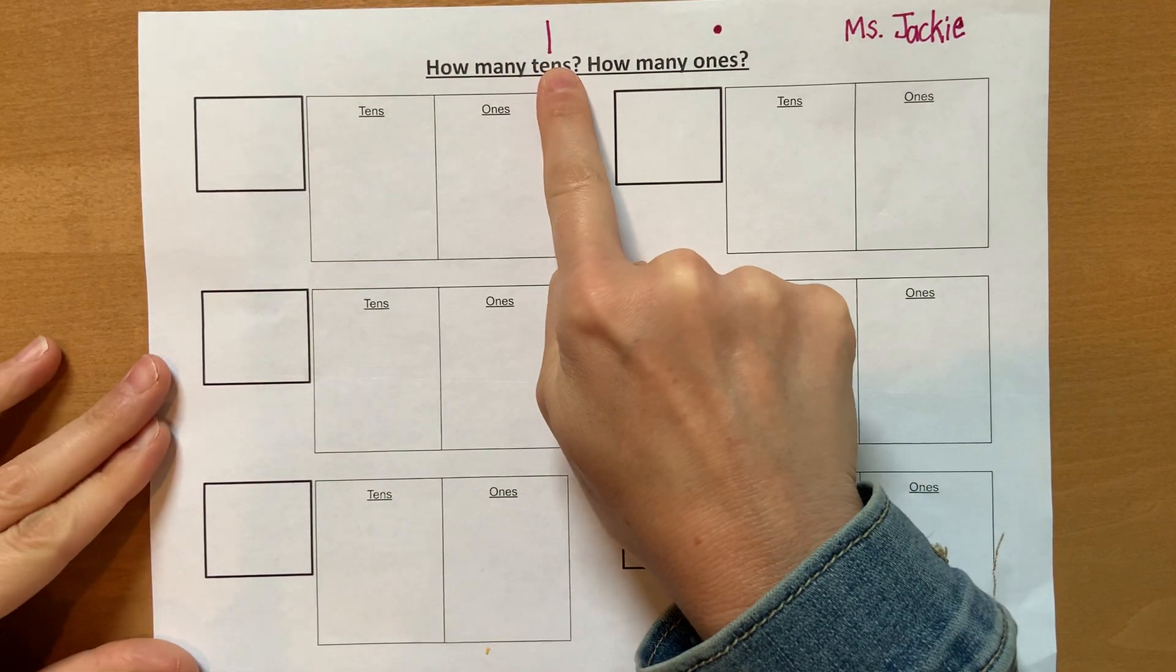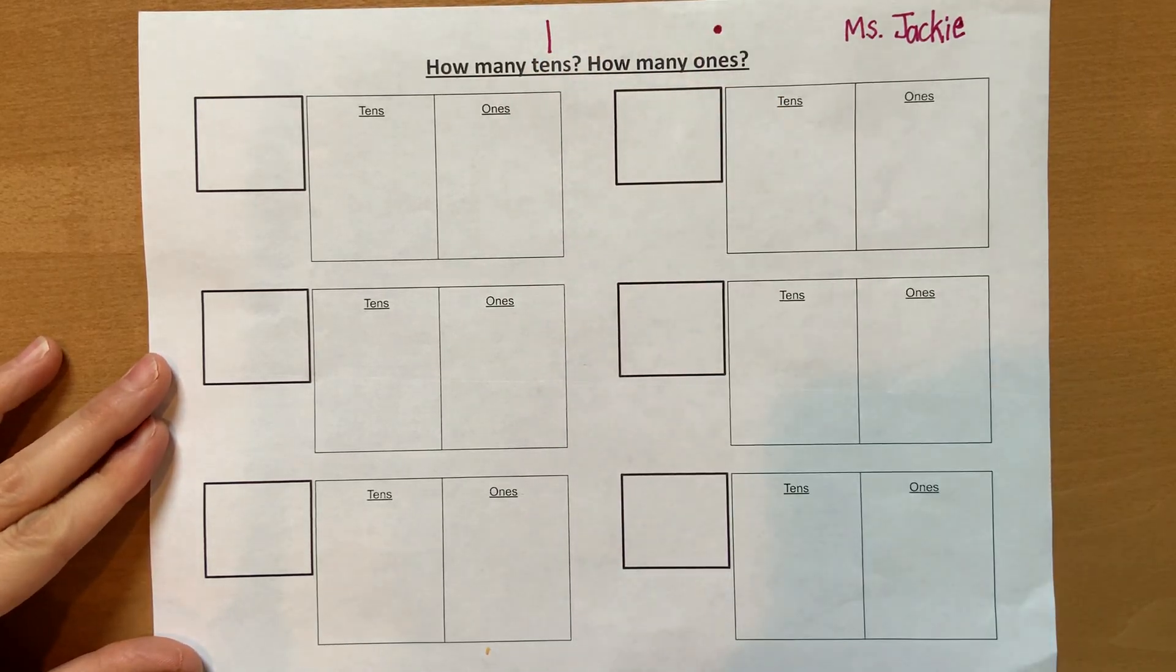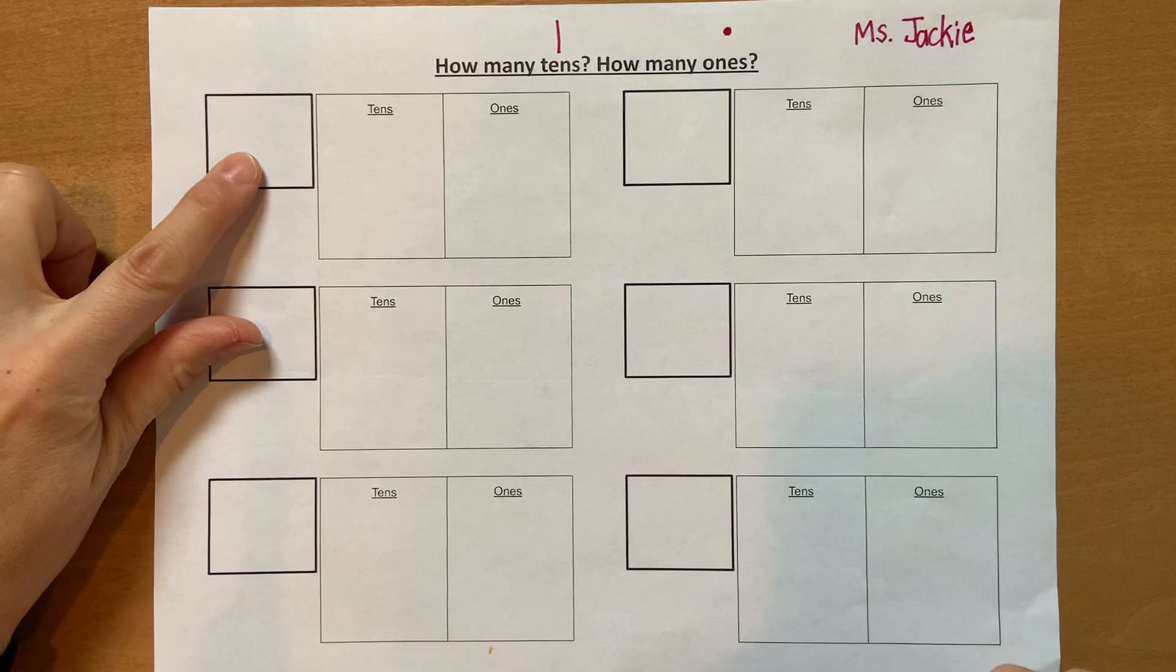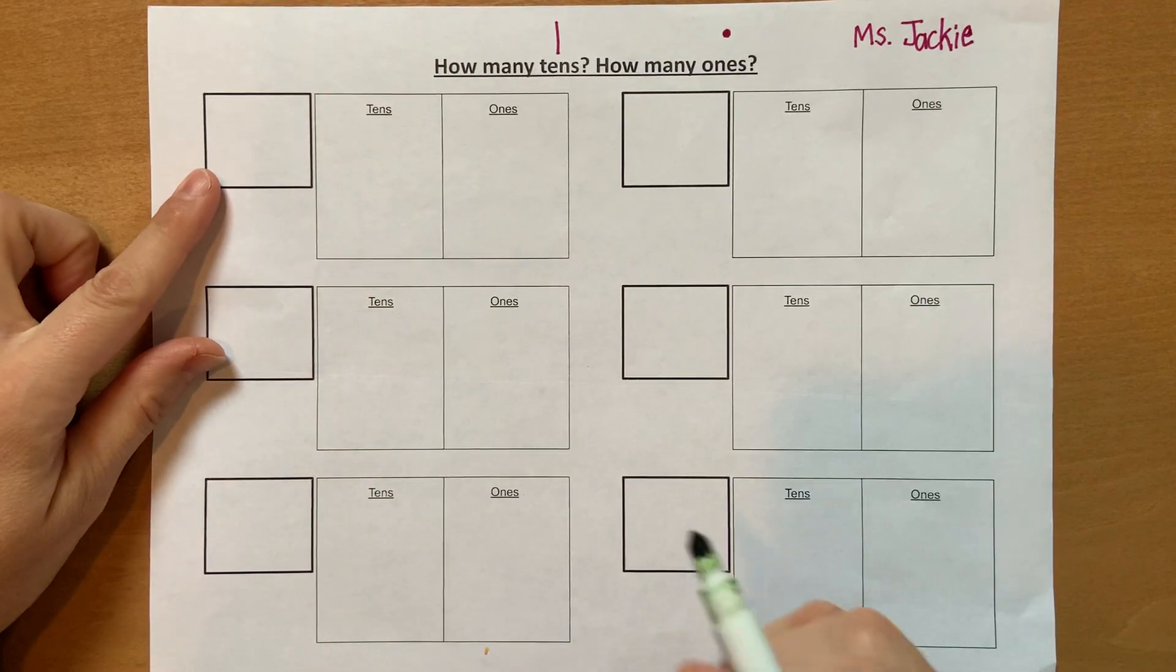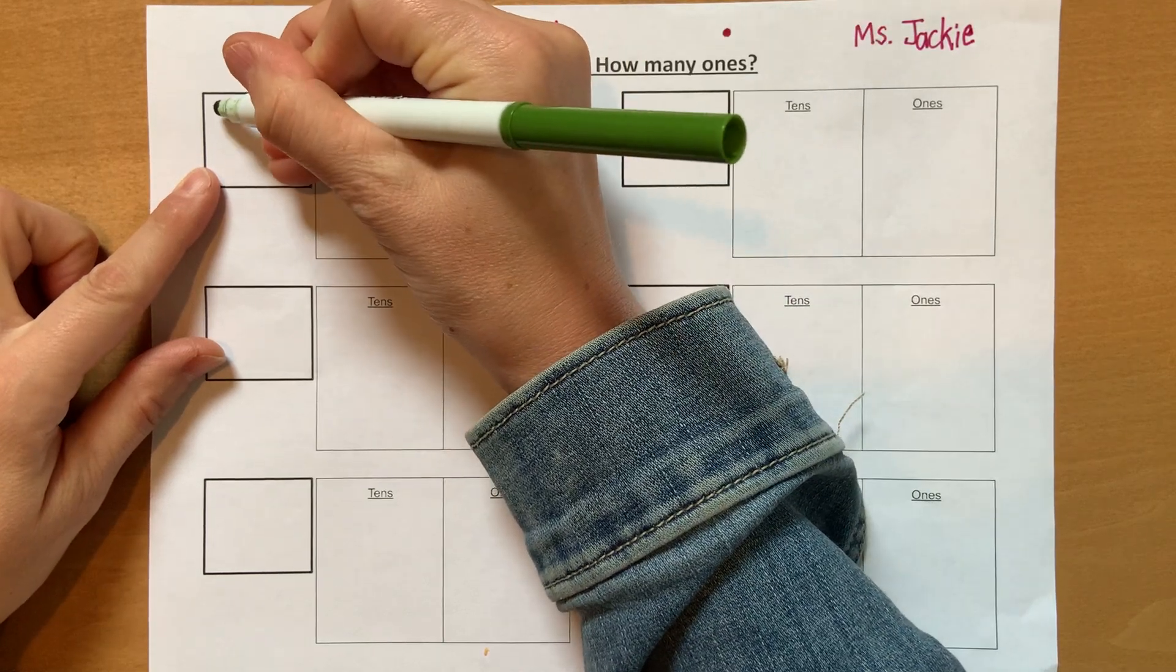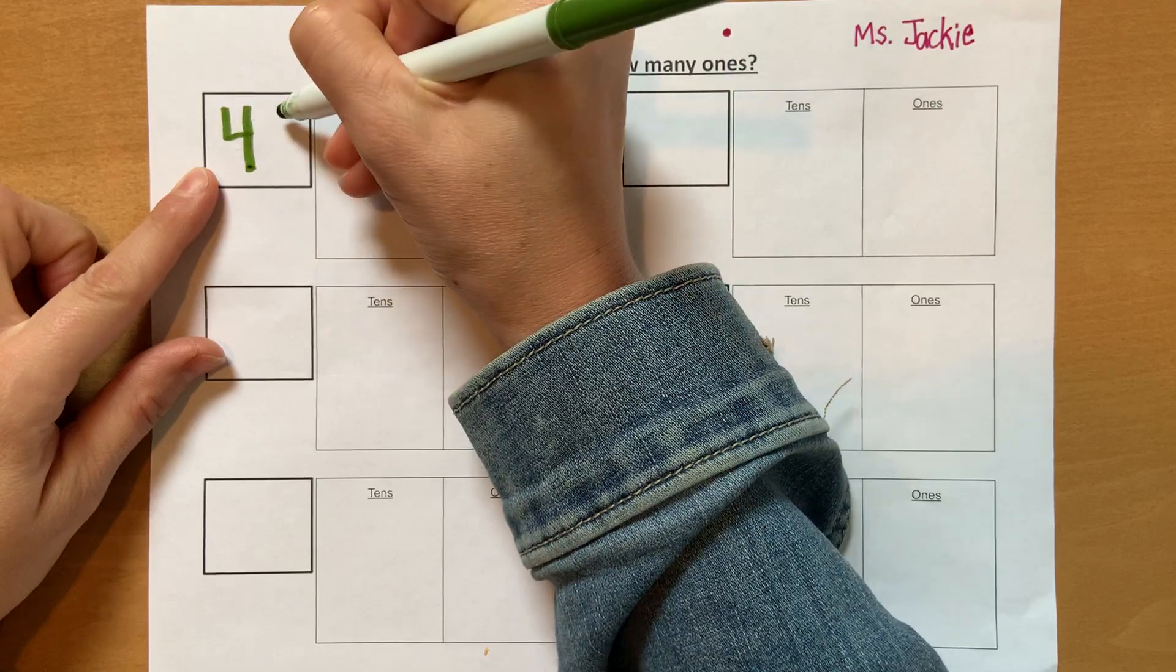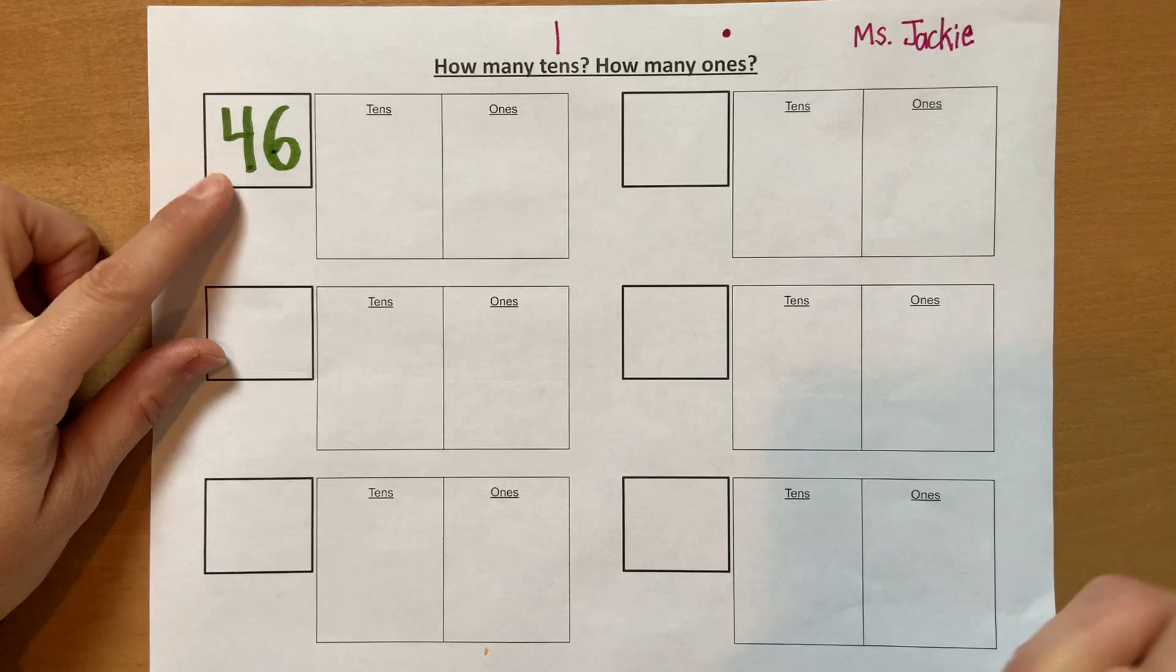My name is Ms. Jackie. So if you need more time, go ahead and pause. I'm going to go on and start writing tens and ones. And remember, I'm going to draw a 10 like a stick and ones like a dot. Okay, so I'm going to get started right away. And in this box, I am going to write the number. My first number that I'm going to do is the number 46.